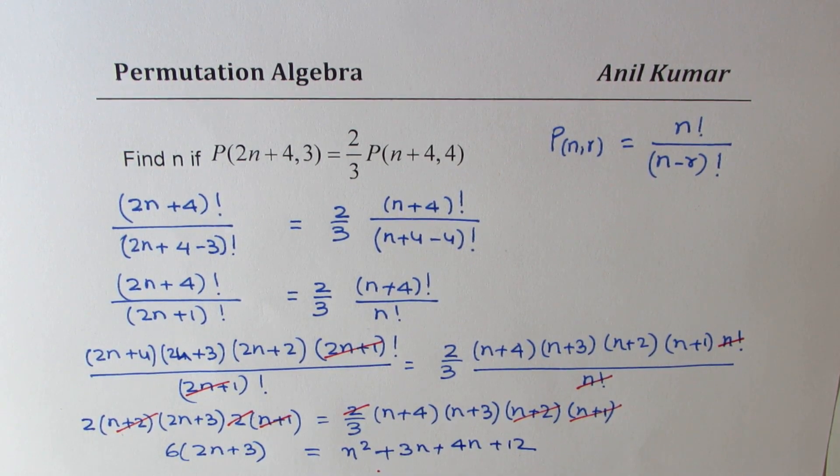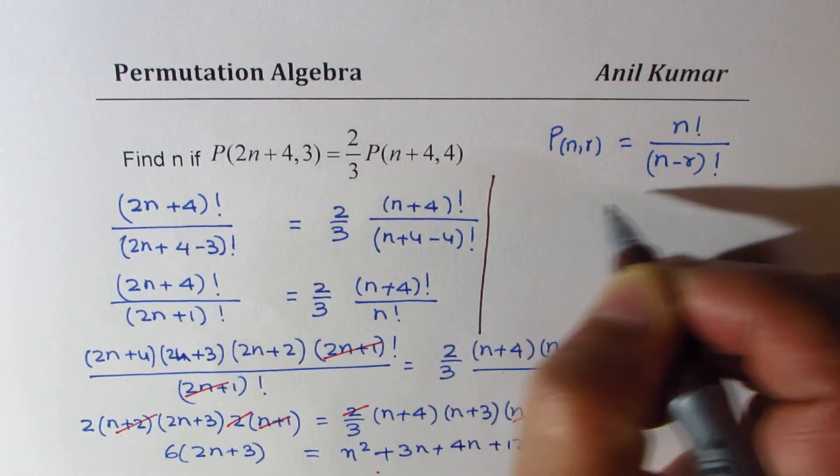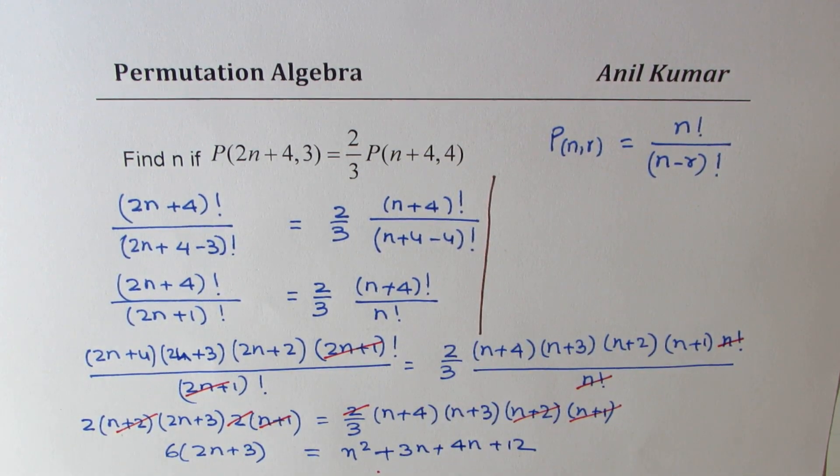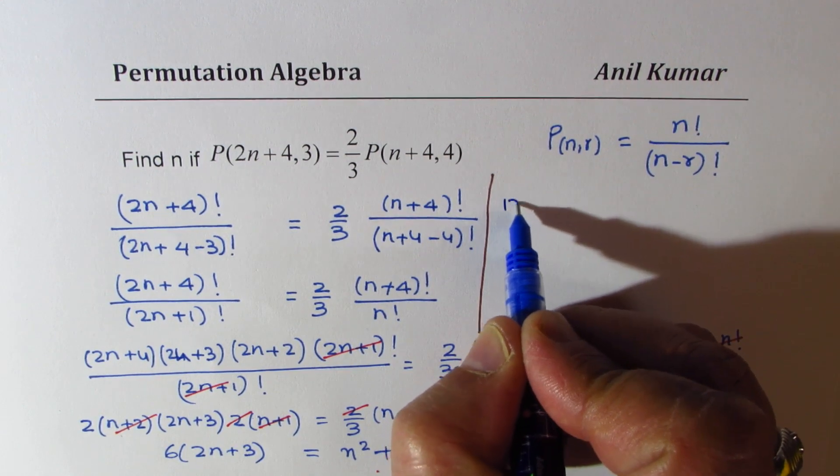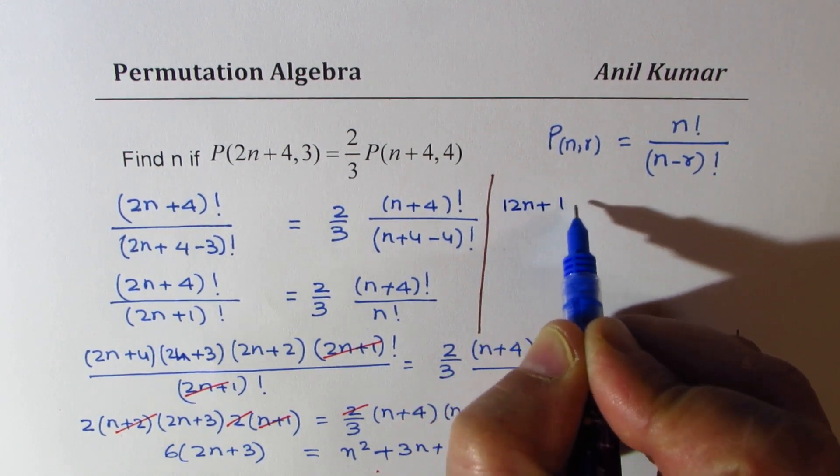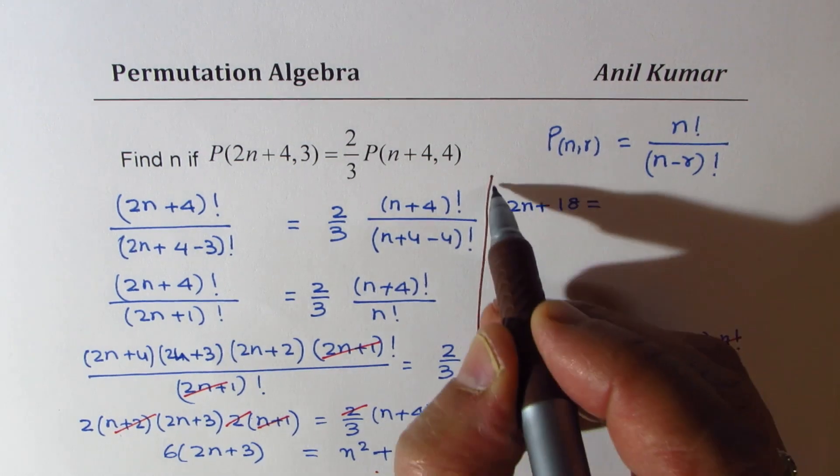Now we have a quadratic equation. We'll use this space to solve it. So we could write this as 6 times 2 as 12, so let me write this as 12n plus 18 equals. So we'll actually use this space.